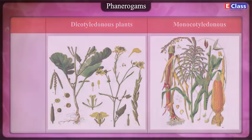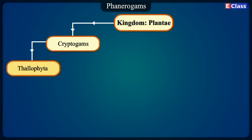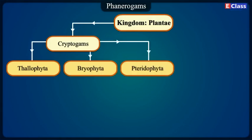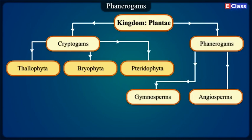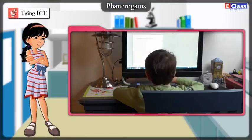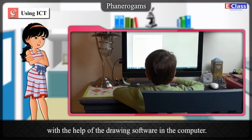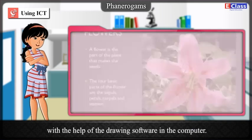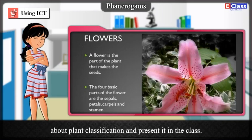Kingdom Plantae is classified as: Cryptogams — Thallophyta, Bryophyta, Pteridophyta; and Phanerogams — Gymnosperms, and Angiosperms (Dicotyledons and Monocotyledons). Using ICT: Sketch diagrams of the plants mentioned in the lesson using drawing software on a computer. Using those sketches, prepare a PowerPoint presentation about plant classification and present it in the class.